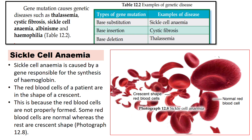Gene mutation causes genetic diseases. Examples include thalassemia, cystic fibrosis, sickle cell anemia, albinism, and hemophilia. These are the types of gene mutations with their respective disease examples.